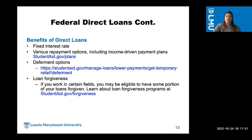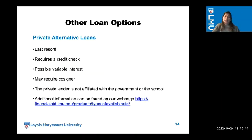Benefits of direct loans include a fixed interest rate, various repayment options including income-driven payment plans, deferment options, and loan forgiveness — if you work in a certain field you may be eligible to have some portion of your loan forgiven. More information at studentaid.gov. Other loan options: private alternative loans are our last resort. They require a credit check, possible variable interest rates, may require a cosigner, and the private lender is not affiliated with the government or the school. Visit our LMU website under 'available aid for graduate students' to learn more.